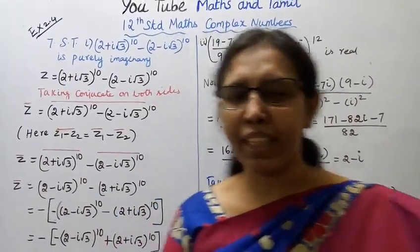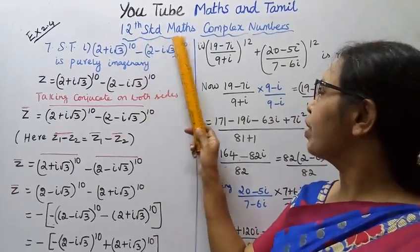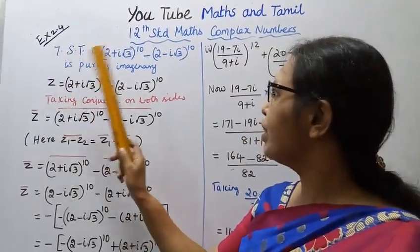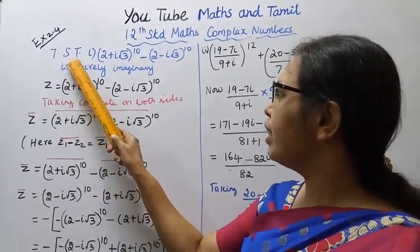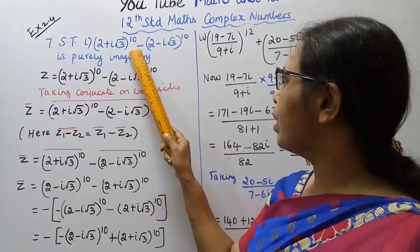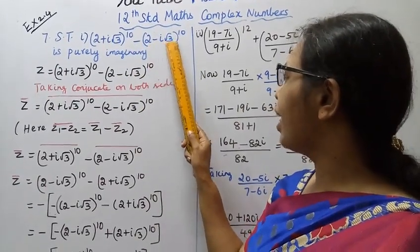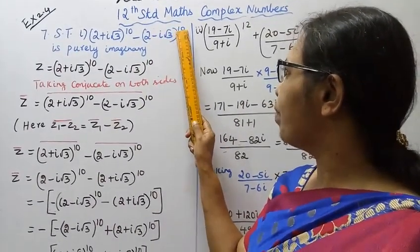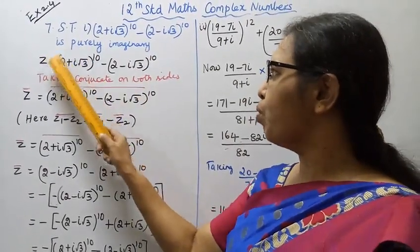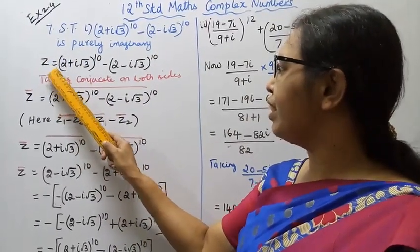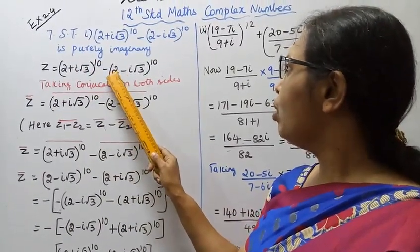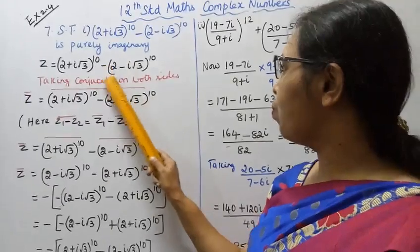Hello students, welcome to Max and Tumble channel. 12th standard Maths, complex numbers, exercise 2.4, question 7, first subdivision. Show that (2 + i√3)^10 − (2 − i√3)^10 is purely imaginary. Let z equal (2 + i√3)^10 − (2 − i√3)^10.